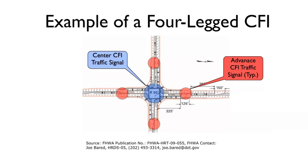This slide shows an example of a four-legged CFI traffic signal. I'm not aware of any that have been constructed in the United States; it's my understanding that some have been constructed in Mexico. If anyone is familiar with a four-legged CFI, please email me — I'd love to look at it in Google Maps and Street View. Here I'm showing the center CFI traffic signal in blue and the advanced CFI traffic signals in red, with a spacing of 325 feet and recommended dimensions for a CFI. This appears to have been widely adopted and is referenced in multiple publications.